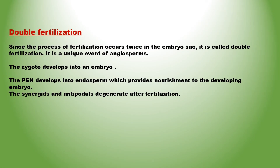Double fertilization: since the process of fertilization occurs twice in the embryo sac, it is called double fertilization. It is a unique event of angiosperms. The zygote develops into an embryo with one or two cotyledons. The endosperm develops and provides nourishment to the developing embryo. The synergids and antipodals degenerate after fertilization. Following fertilization, the ovules develop into seeds. The seed contains the embryo, or the potential plant. During the formation of fruit, the rest of the flower withers away. The ovary develops into the fruit, and the ovary wall forms the fruit wall called the pericarp.